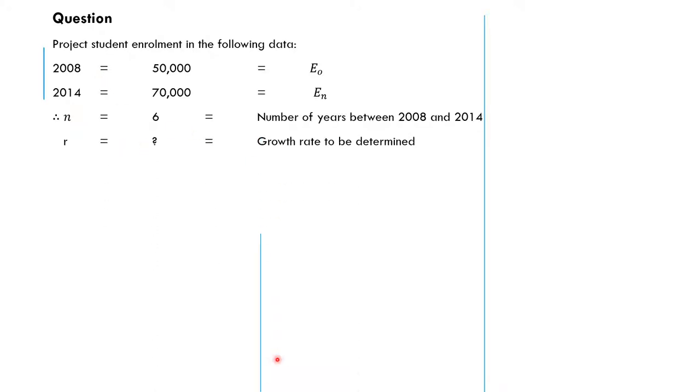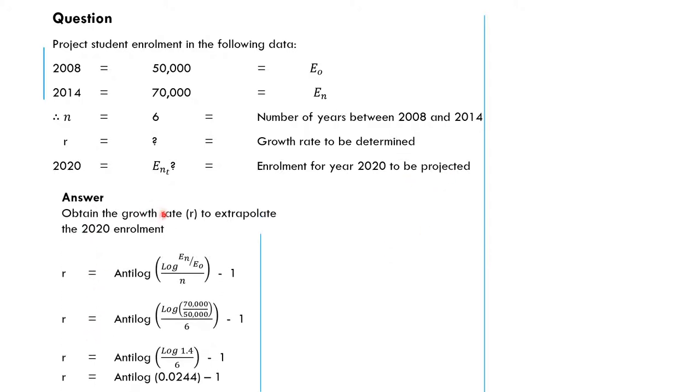Then you have the r, the growth rate to be determined. Then you have 2020, that is the year that you need to project. Now, what do we do to get this?